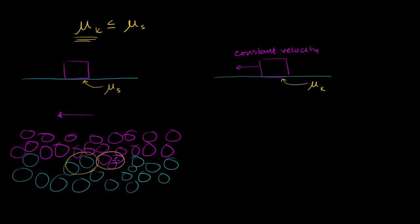Once something is already moving, and this is at least how I think about it, it doesn't have a chance to settle into these little ruts. So let me draw something that's already moving. I'll try to draw a similar surface. So I'm trying to draw the surface that looks essentially just like the one I drew. This is supposed to be the same surface.